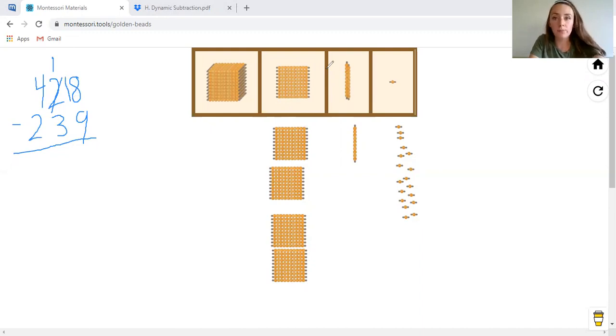So now we can take nine from 18. So we'll go ahead and put nine back. We're going to take them away, all the way away. 1, 2, 3, 4, 5, 6, 7, 8, 9.